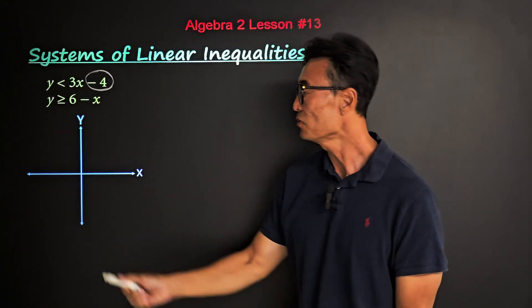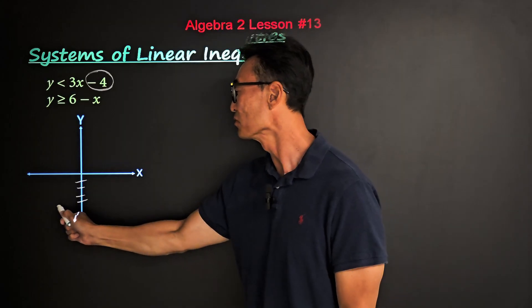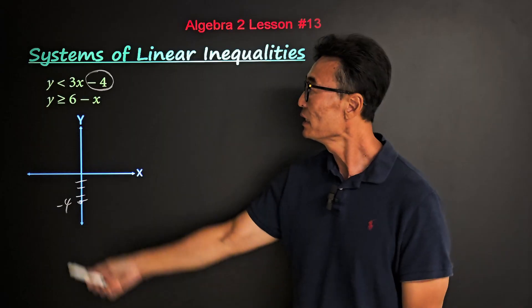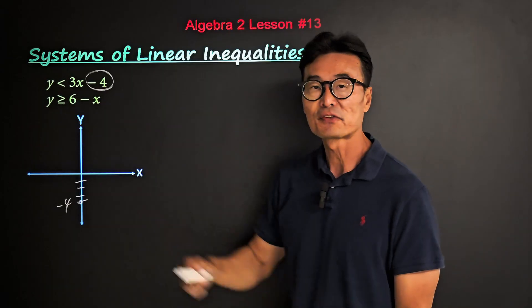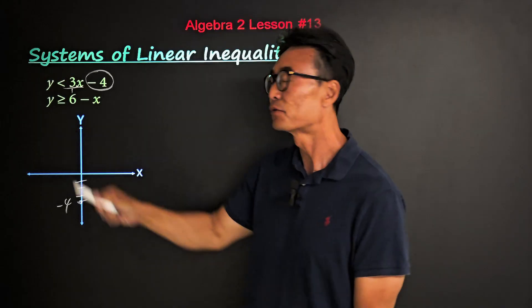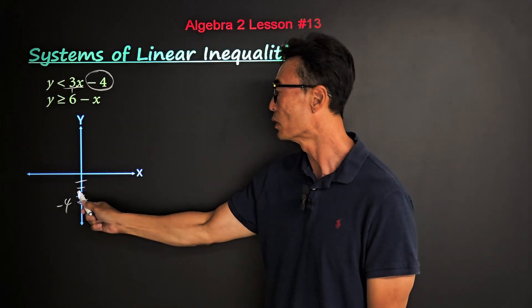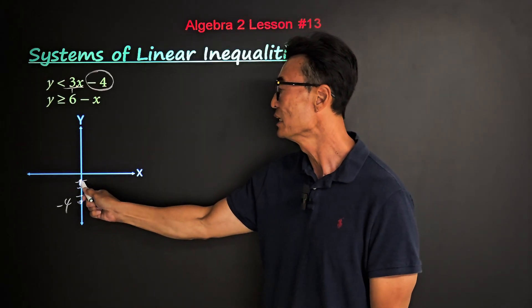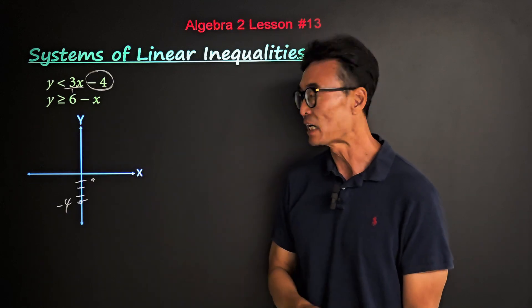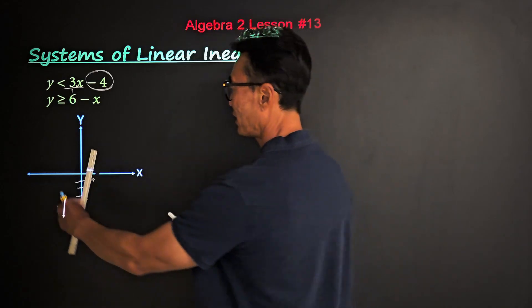Here we have a y-intercept of negative four, so let's start there: one, two, three, four — there's our y-intercept of negative four. The slope is three, which I'd like to rewrite as three over one, showing it goes up three and one to the right. Connecting those dots we get our line.